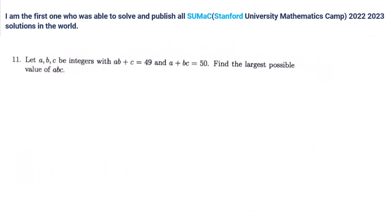I tried doing 50 minus 49, and that equals 1 is equal to A minus C times 1 minus B. A plus B, C minus A, B minus C is 1. Then, can we factorize? A minus C times 1 minus B.